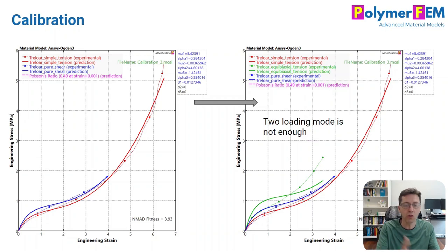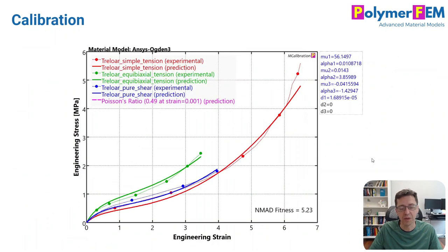I need more information. In other words, in this case, two loading modes was not enough either. So I actually had to activate all three. And if I do that, I can pretty accurately predict the data set that's available in this case. So keep that in mind. Don't use too little experimental data and think you can get a good Ogden model. You can't. You really have to be very careful working with this type of non-linear material model.